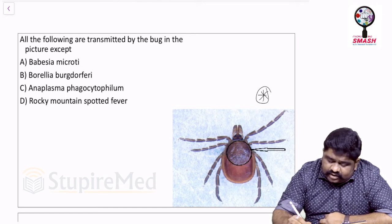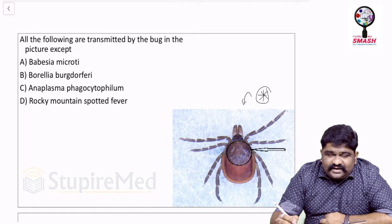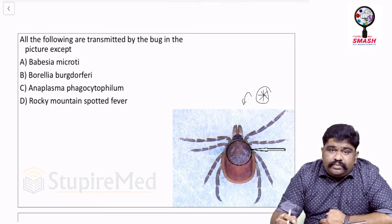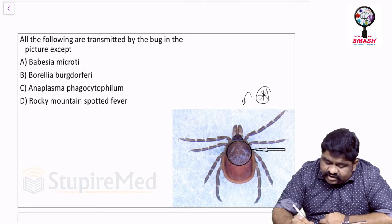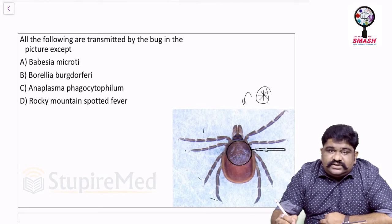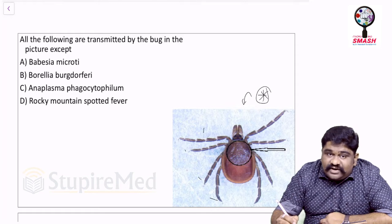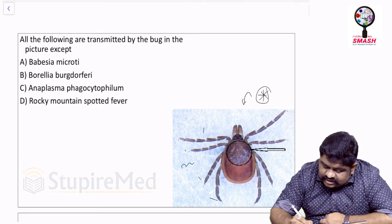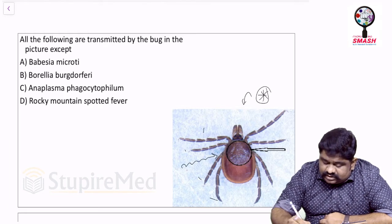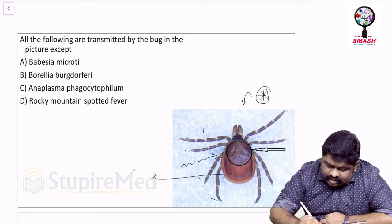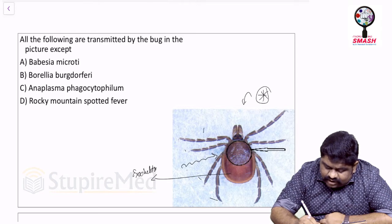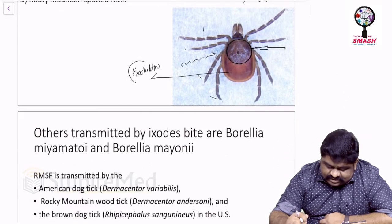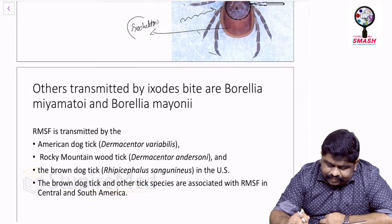Ask yourself what the bug is. Notice it has four pairs of legs. Look at the color of the legs and at what has been circled on the surface of the bug — that would be the exoskeleton. On the exoskeleton, you can see some kind of weird markings, referred to as ornamentation.